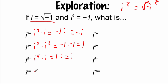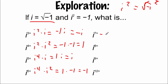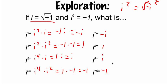i to the sixth is i to the fourth times i squared, which is one times negative one, giving negative one. The pattern continues: i, negative one, negative i, positive one — then it starts over again, i, negative one, negative i, positive one, and so forth.